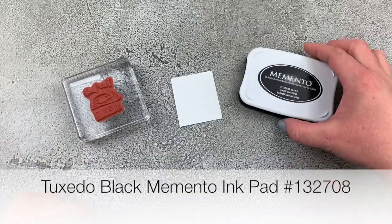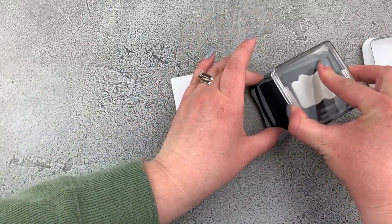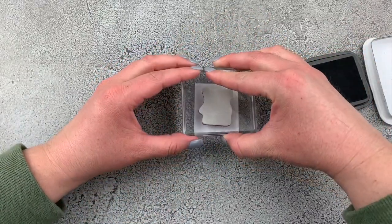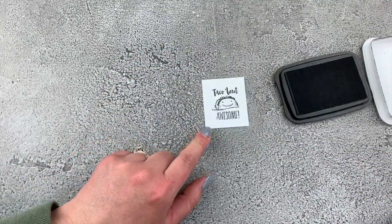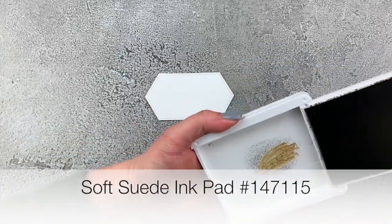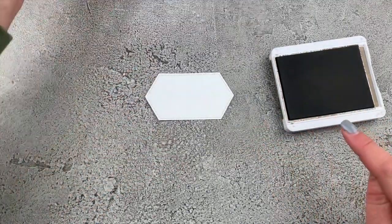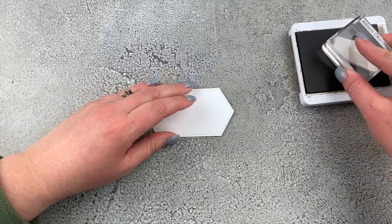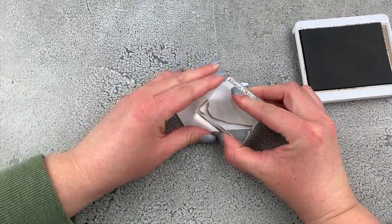Using the Tuxedo Black Memento ink, I want to stamp the stamp that says 'Talk About Awesome.' Look at how cute. I love this stamp. Then with our Soft Suede ink pad, we're going to stamp onto our label. This time we're using this stamp from Label Me Bold, and we're just going to ink that up and stamp it on the side here.